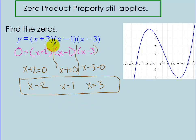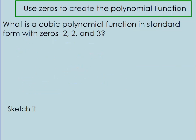If I graph this equation, it makes sense — my zeros are at negative 2, where it crosses the x-axis (y is zero), and I have a zero at 1 where it crosses again, and a zero at 3.